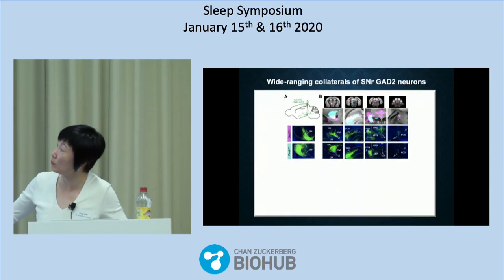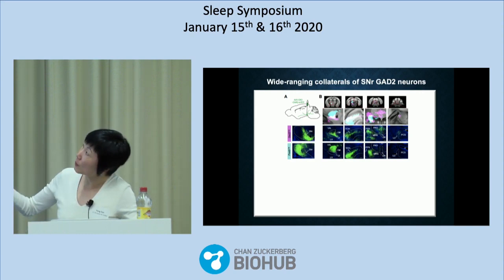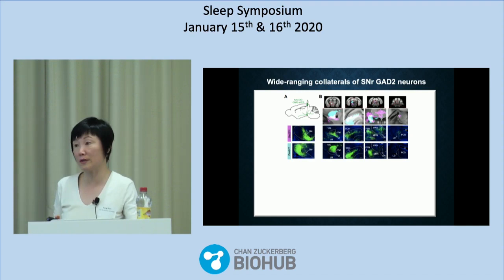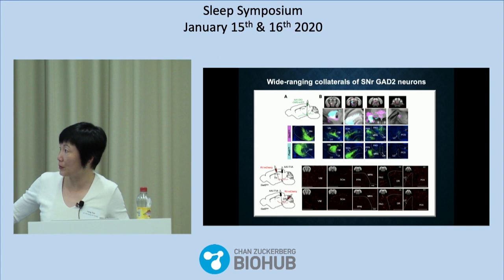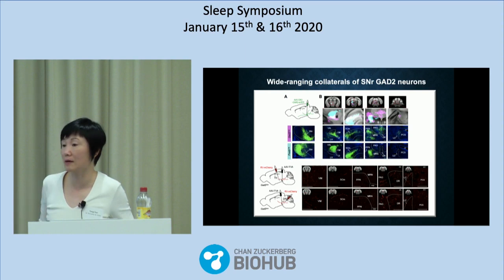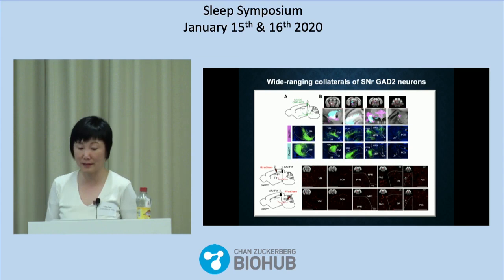We also looked at the downstream targets of these cells. The PV neurons project to the motor thalamus, the motor layers of the superior colliculus, and the midbrain locomotor region — all motor regions. The GAD2 neurons project to these same motor regions, but in addition they project to the dorsal raphe — containing serotonergic and dopaminergic neurons — and the locus coeruleus with noradrenergic neurons, all important for brain arousal. A subset of GAD2 neurons projecting to the thalamus also shows axon collaterals in the dorsal raphe and locus coeruleus, and vice versa.